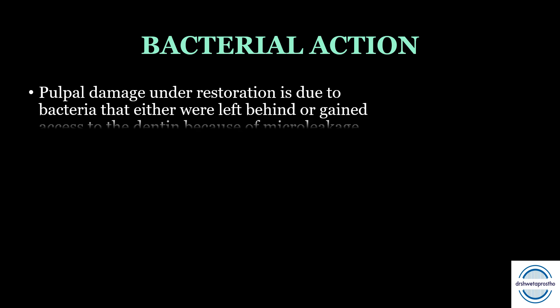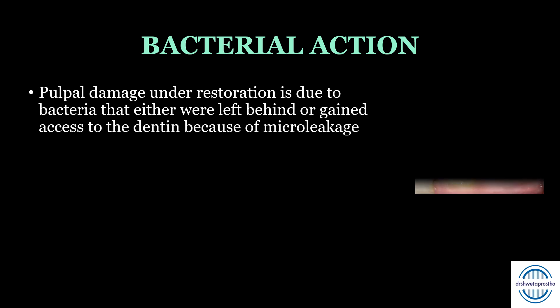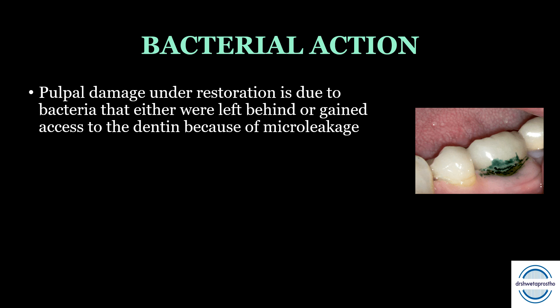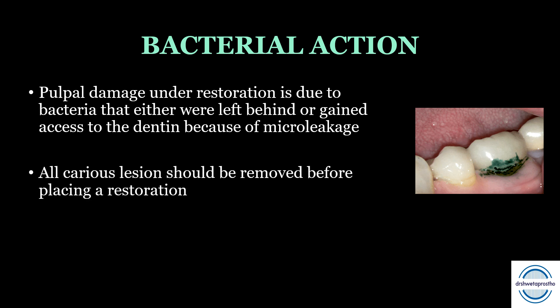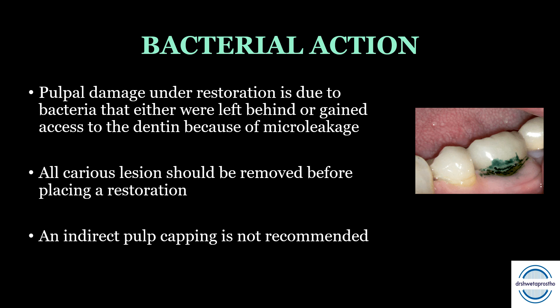Third is bacterial action. Pulpal damage under the restoration is due to bacteria that was either left behind or gained access to the dentine because of micro leakage. Marginal adaptability of the restoration is very, very important so that no micro leakage is present. Also, all caries lesions should be removed before placing the restoration because it serves as the foundation of the prosthesis. One more point: indirect pulp capping is not recommended in an abutment used for extensive prosthodontic treatment.